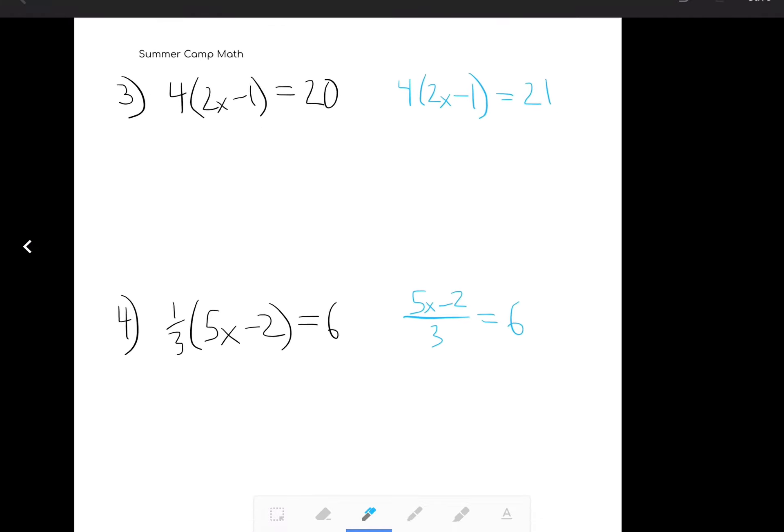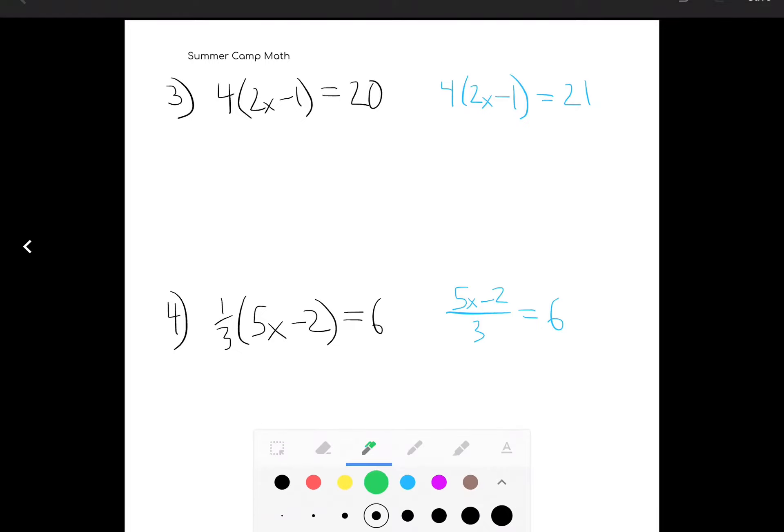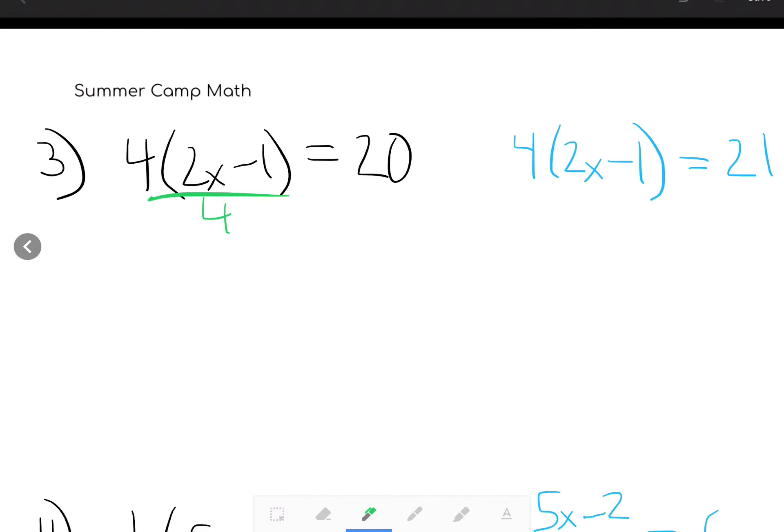Alright, next let's take a look at the distributive property. Now what I have got going on here is writing these problems down twice because I want to make a point. When you see something like this, we have two options. Option one is we can distribute in and then take it from there. Option two is to take a look at what we have and maybe avoid distributing altogether. And that's what I'm going to suggest for this one, that I'm going to divide by 4 because 20 is a nice multiple of 4. When I do that, this 4 and this 4 cancel each other out and we're left with just 2x minus 1 is equal to 5. Again, we've now converted this to a real nice two-step equation problem. So add 1 to both sides. We'll have 2x is equal to 6 divided by 2 divided by 2. We have x equals 3.